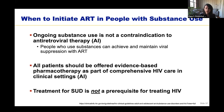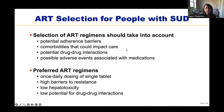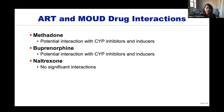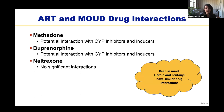When thinking about ART selection for people with substance use disorder, the guidelines recommend selection taking into account potential adherence barriers, comorbidities, potential drug interactions, and possible adverse events. Preferred ART regimens include once-daily dosing of a single tablet, high barriers to resistance, low hepatotoxicity, and low potential for drug-drug interactions. In terms of drug interactions between ART and MOUD, methadone and buprenorphine have potential interactions with CYP inhibitors and inducers. Relevant CYP inhibitors and inducers include efavirenz, etravirine, and nevirapine in the NNRTI class; boosted atazanavir, boosted darunavir, and boosted lopinavir in the PI class; and boosted elvitegravir in the INSTI class.